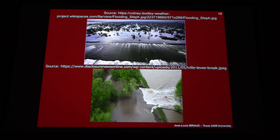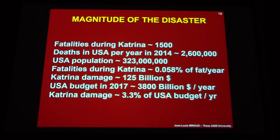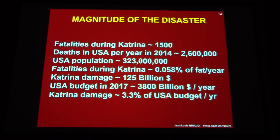More pictures of water overtopping levees, levee breaches, and tremendous devastation. The magnitude of the disaster: 1,500 fatalities. There are about 2.5 to 2.6 million deaths in the country every year with a population of 320 to 330 million, so that's about a 0.05 to 0.06 ratio. The damage is quoted as high as 125 billion dollars. By comparison, the country's budget is about 4 trillion dollars, so this is about 3.3% of the total budget - a huge impact.